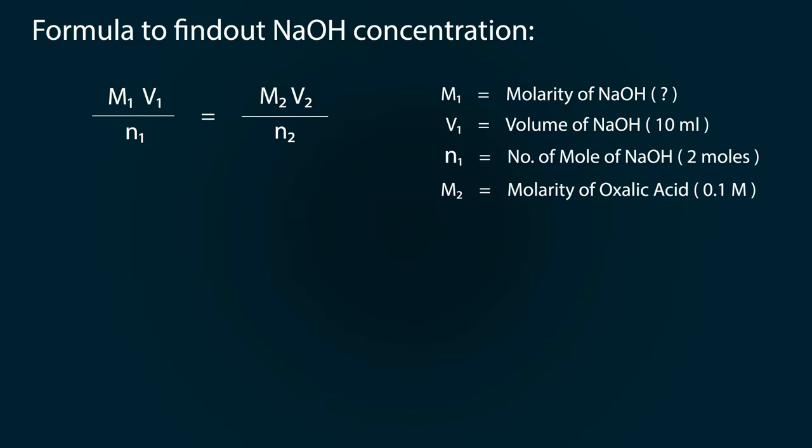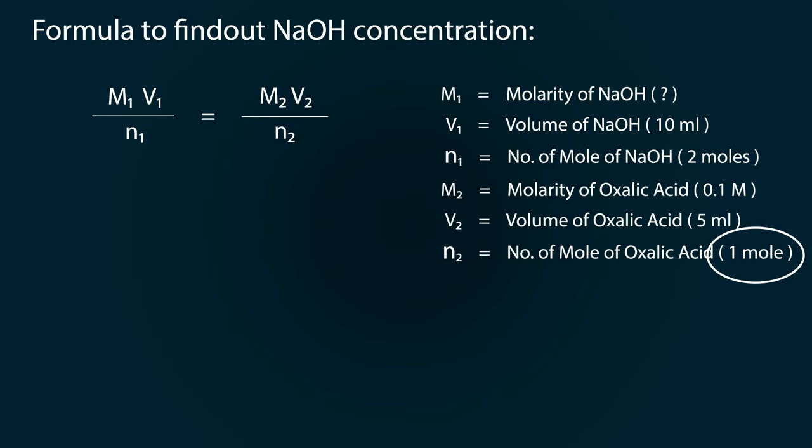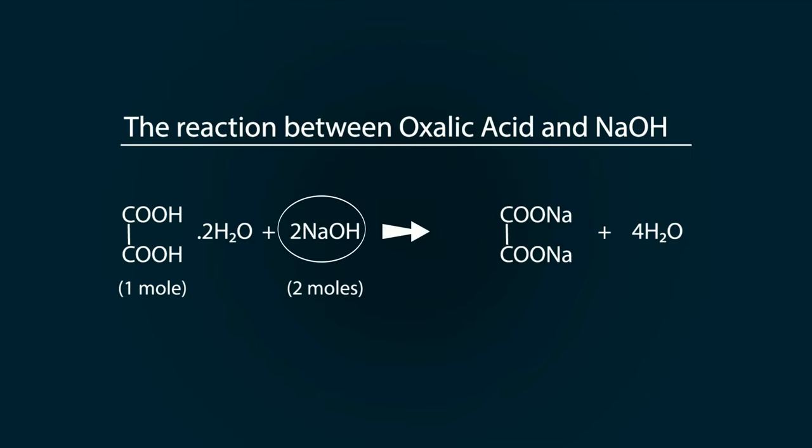m2 is the molarity of oxalic acid, which we know is 0.1 molar. v2 is the volume of oxalic acid, which is 5 milliliters. n2 is the number of moles of oxalic acid, which is 1 mol. We also got that from the reaction. You can see 1 mol of oxalic acid is used.